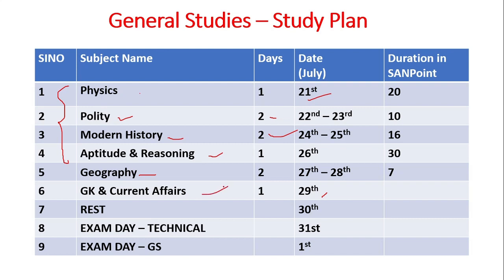Next comes GK and Current Affairs, which is very difficult and depends on whether you are in touch with current affairs. Sources include newspapers, magazines, apps, and YouTube channels. If you are targeting administrative jobs you may already be following such sources. You can spend the whole day on the 29th on current affairs — referring to some YouTube channels is the best approach for current affairs.